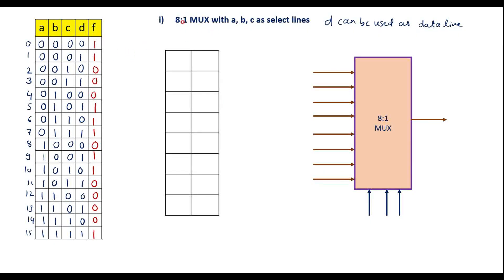We need to implement this using an 8-to-1 MUX. In an 8-to-1 MUX we have 3 select lines because 2 to the power 3 is 8, and we have 8 data lines. Here I will use A, B, C as select lines and D as the data line. Now we have to write the implementation table.